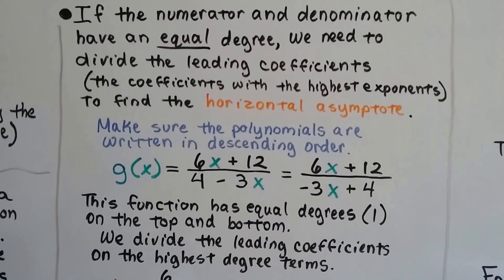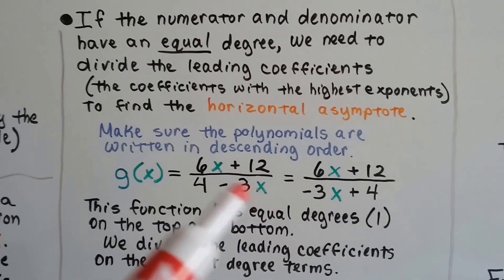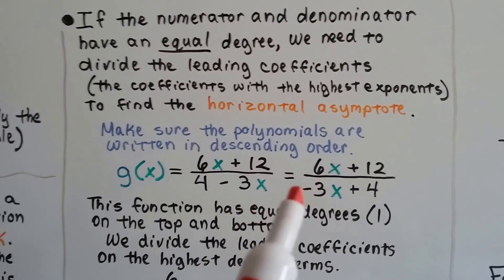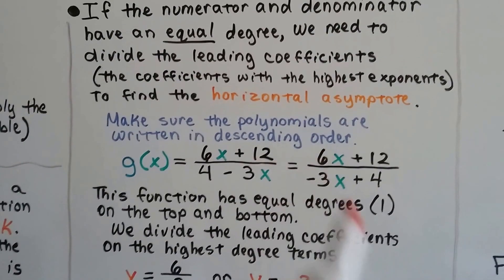If you see something like this, where this 3x is back here and the 6x is up here, we can rewrite this as the denominator is a negative 3x plus 4, can't we? Then we've got them in the right order.